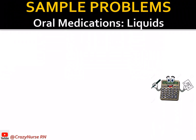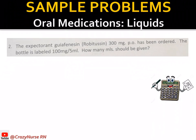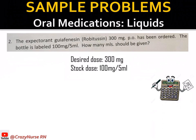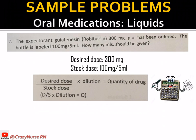For oral medication in liquid form: the expectorant guaifenesin (Robitussin) 300 milligrams per oral has been ordered. The bottle is labeled 100 milligrams per 5 ml. How many ml should be given? The desired dose is 300 milligrams and the stock dose is 100 milligrams per 5 ml — meaning in every 5 ml of fluid there is 100 milligrams of the drug.